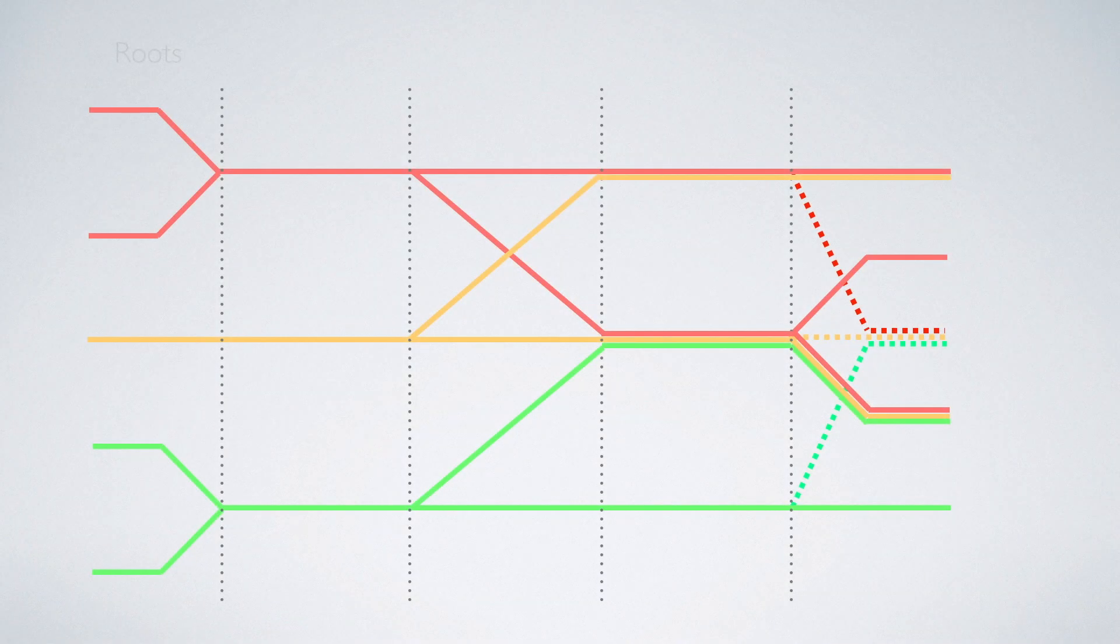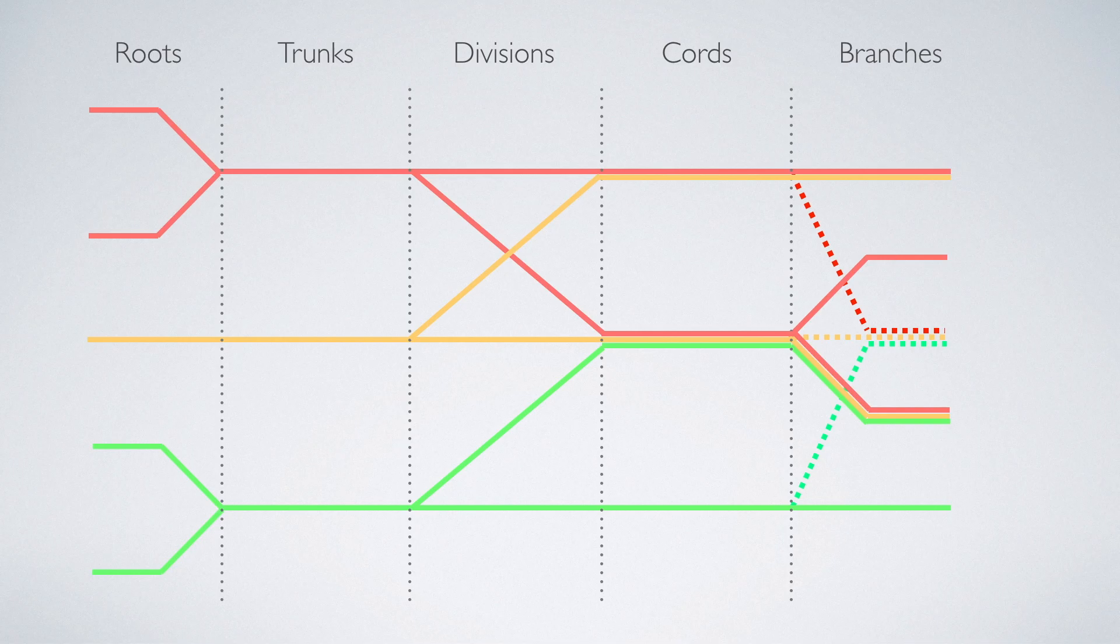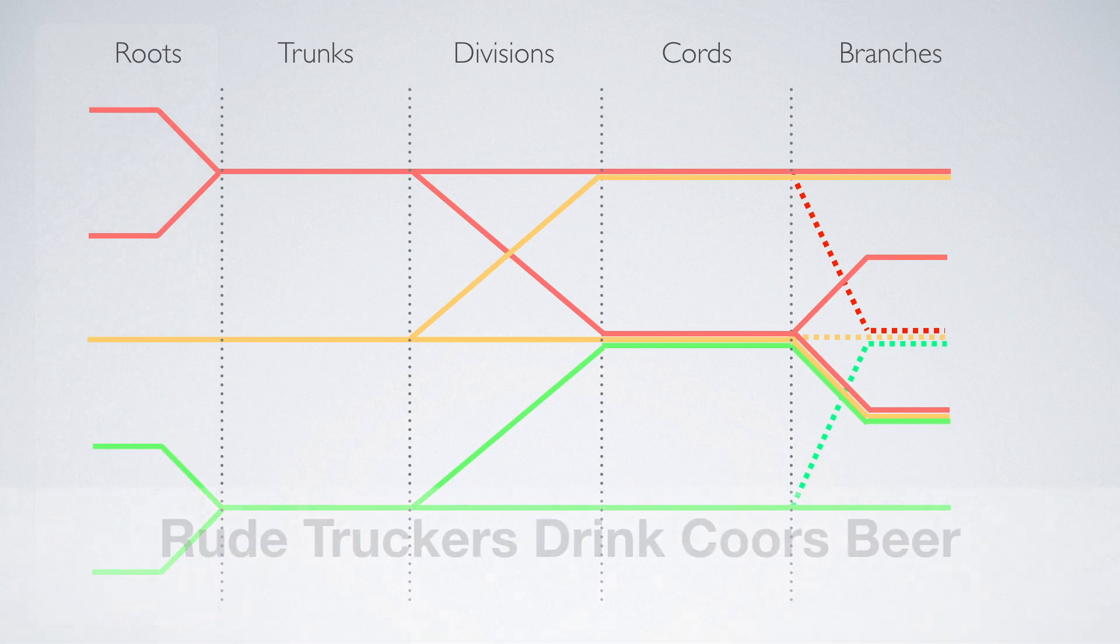The brachial plexus has five major divisions. You have the roots, trunks, divisions, cords, and branches. An easy mnemonic to remember this is rude truckers drink Coors beer.